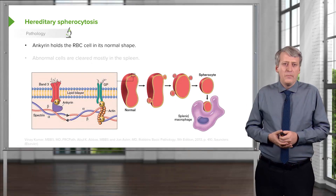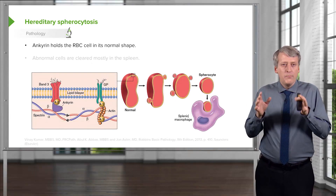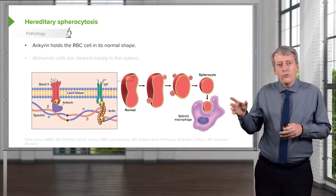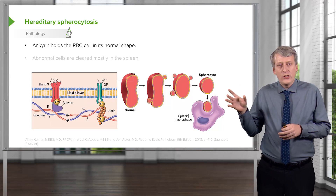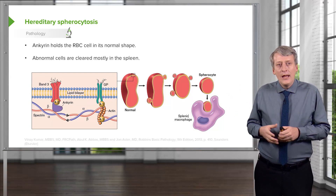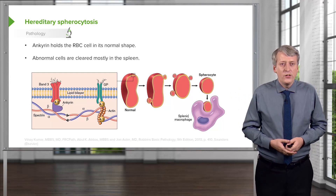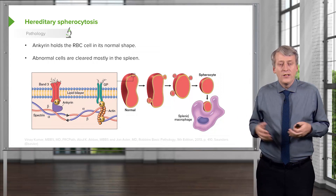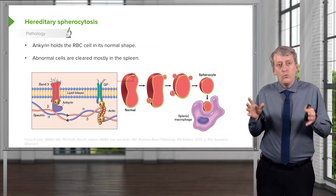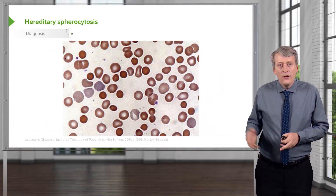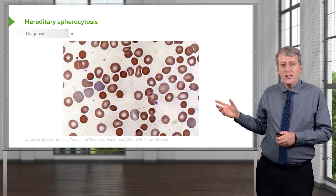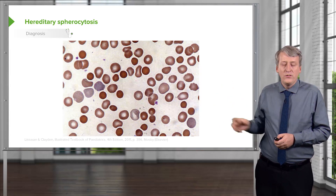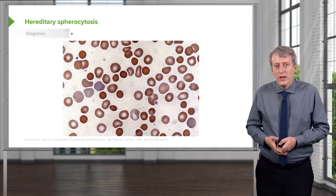Let's look a little bit deeper. Ankyrin in patients with hereditary spherocytosis is the problem. Ankyrin normally holds the red blood cell into the shape that we expect. In patients with hereditary spherocytosis, the abnormal cells are cleared prematurely, mostly in the spleen, so these patients will have an anemia. You can see an example of the disease — the cells are not showing the normal picture we would expect — and you can make this diagnosis pretty much on a blood smear.